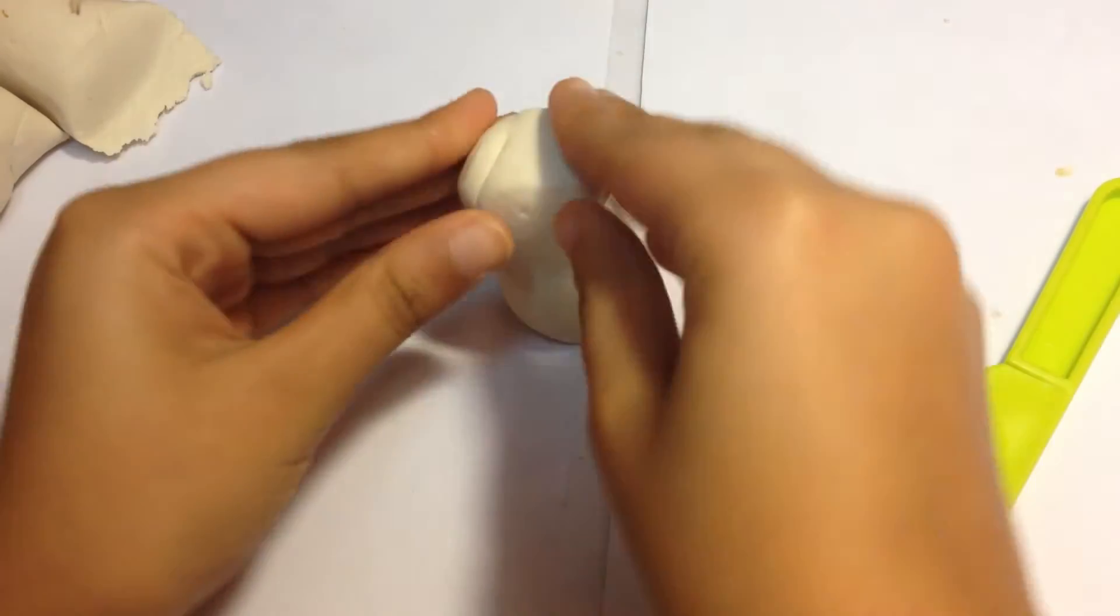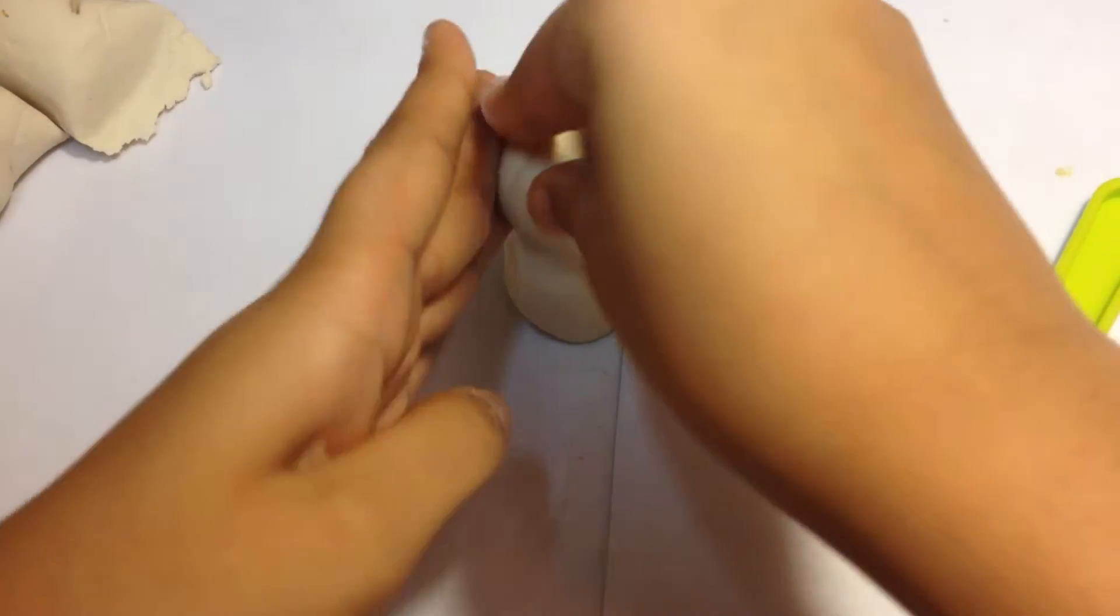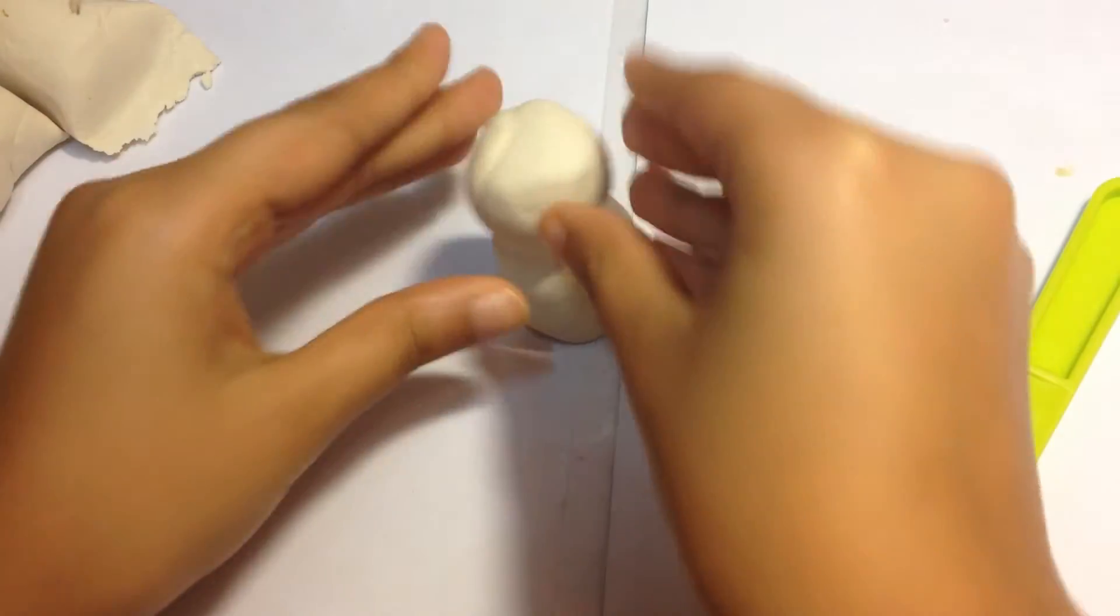And then for the top, you can just try to make it round. Cool. Now I'm going to take some of my red Play-Doh.